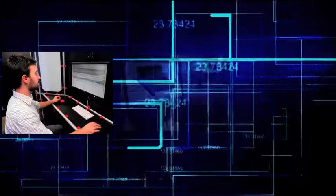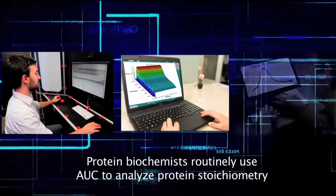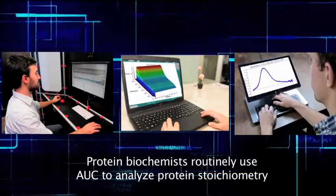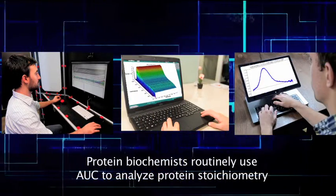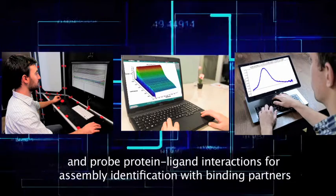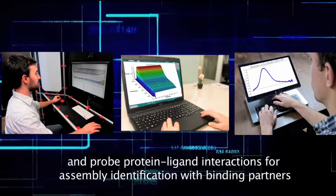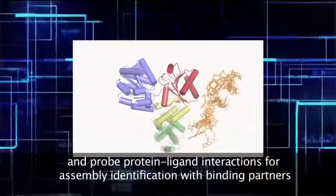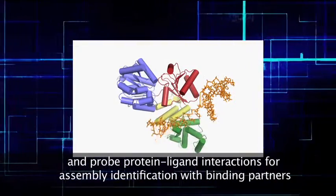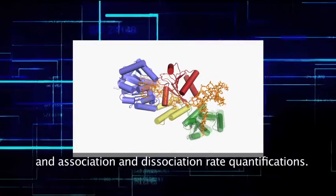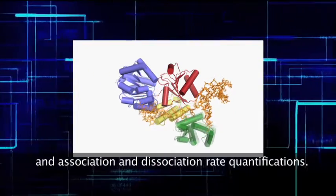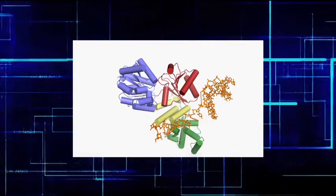Protein biochemists routinely use AUC to analyze protein stoichiometry and protein-ligand interactions for assembly identification with binding partners, as well as association and dissociation rate quantifications.